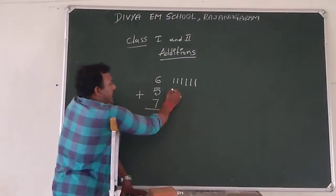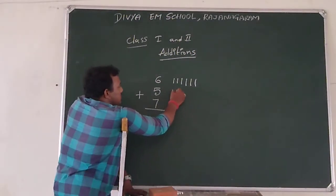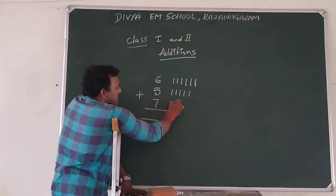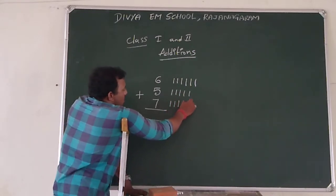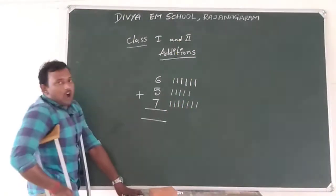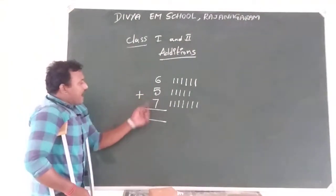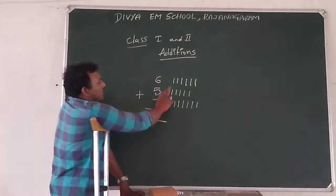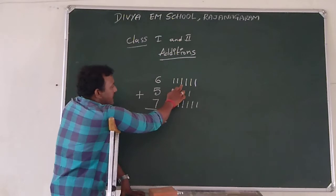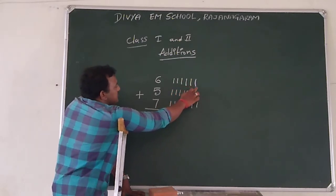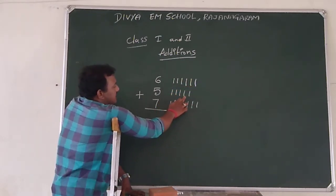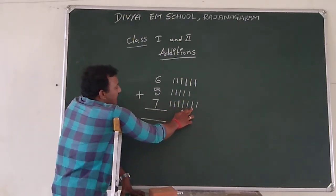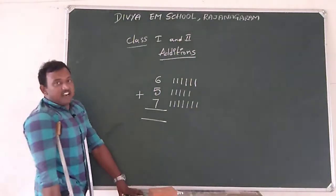For 5, we are going to take 5 sheets: 1, 2, 3, 4, 5. Now for 7, 7 sheets: 1, 2, 3, 4, 5, 6, 7. Now counting all sheets: 1, 2, 3, 4, 5, 6, 7, 8, 9, 10, 11, 12, 13, 14, 15, 16, 17, 18. So the total sheets are 18.